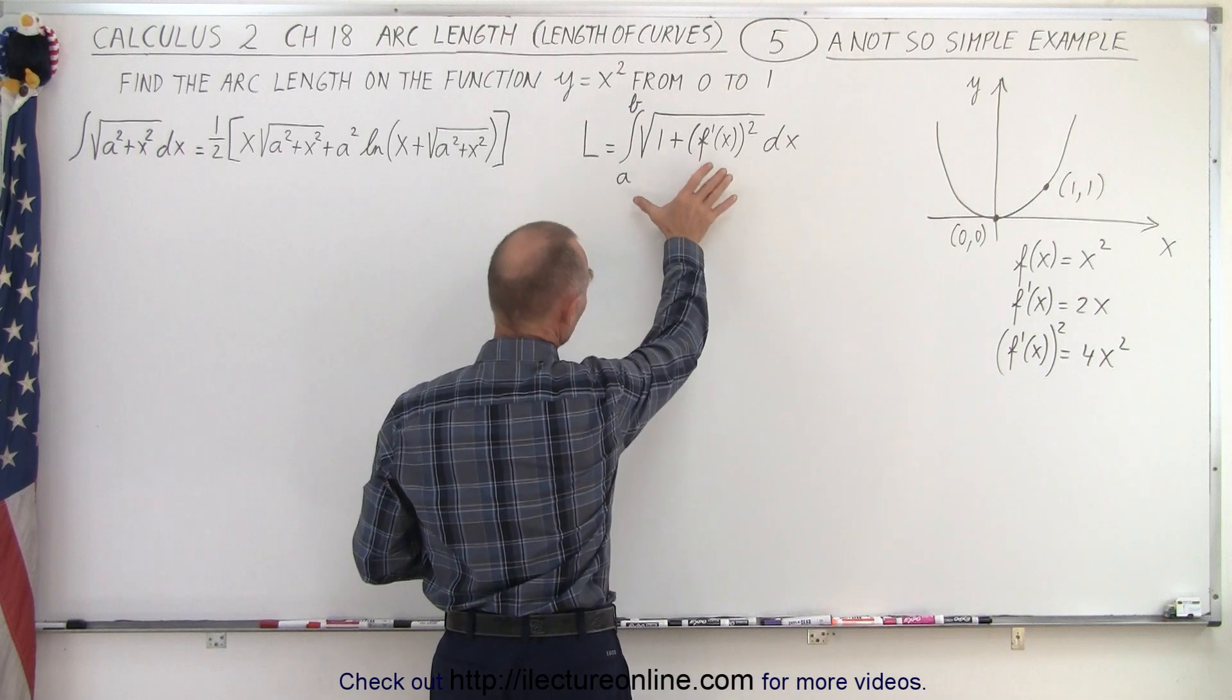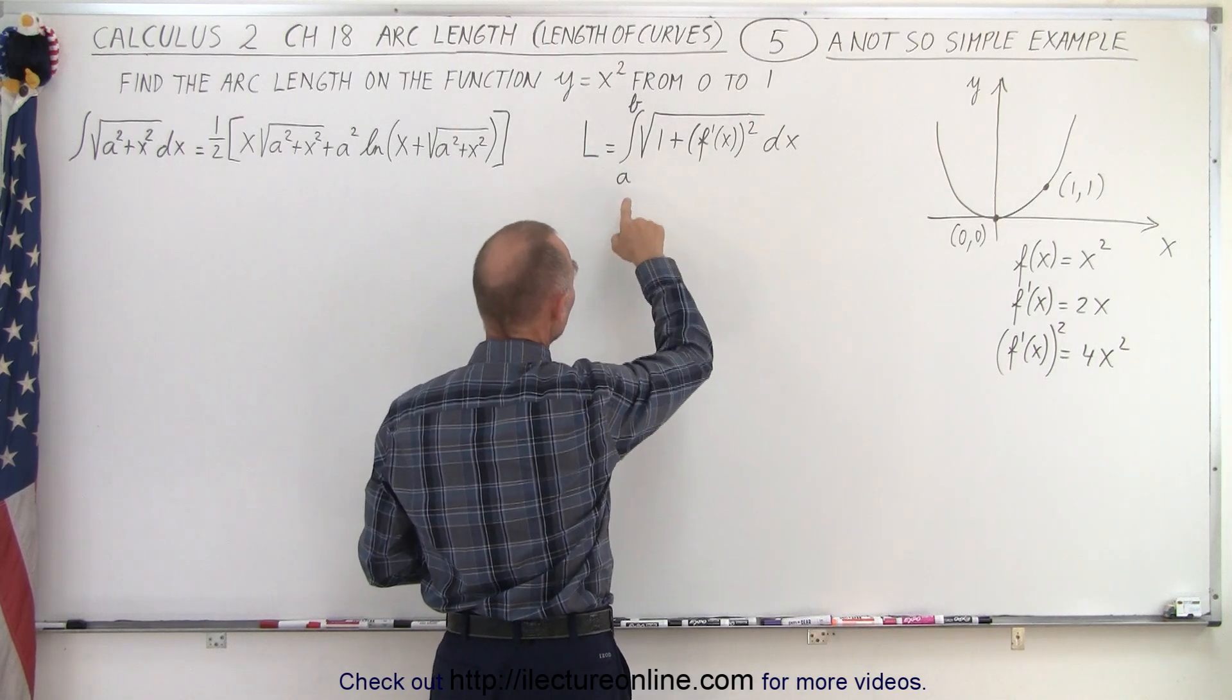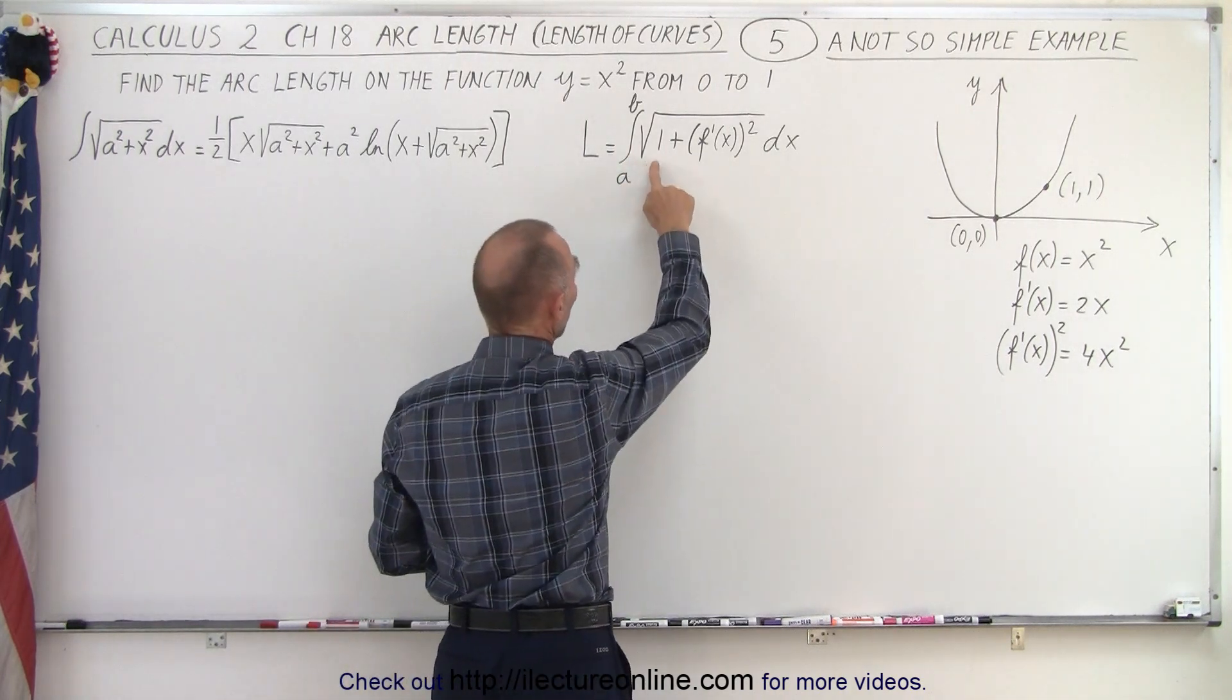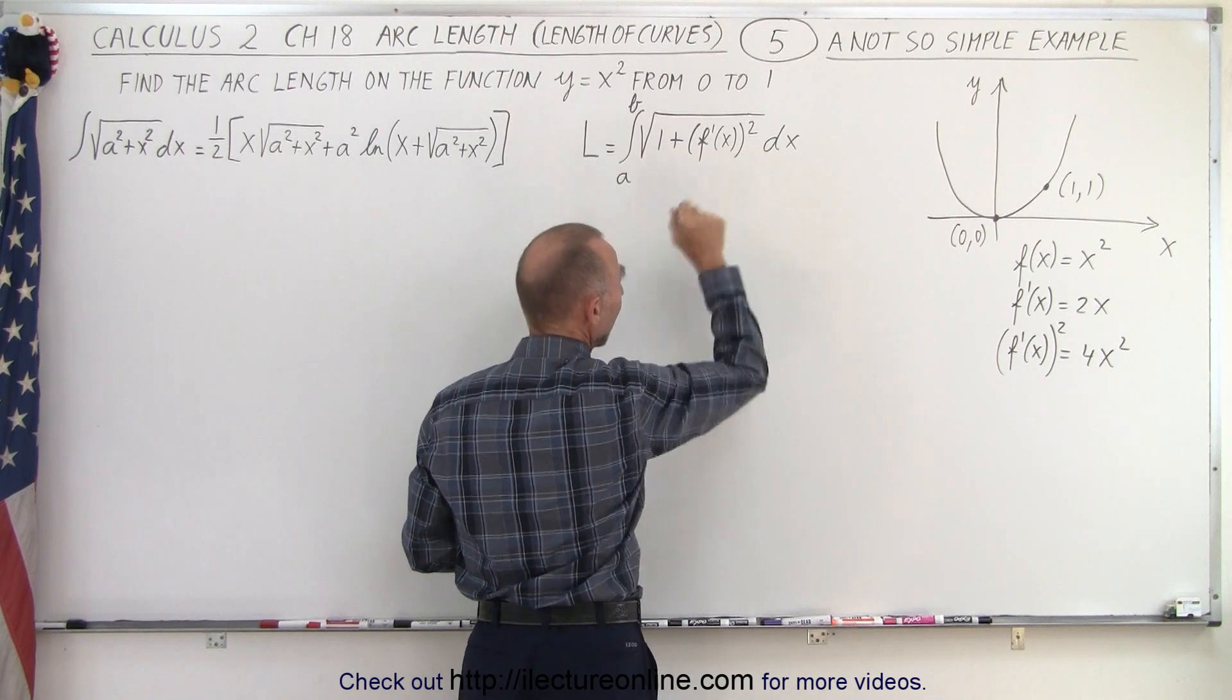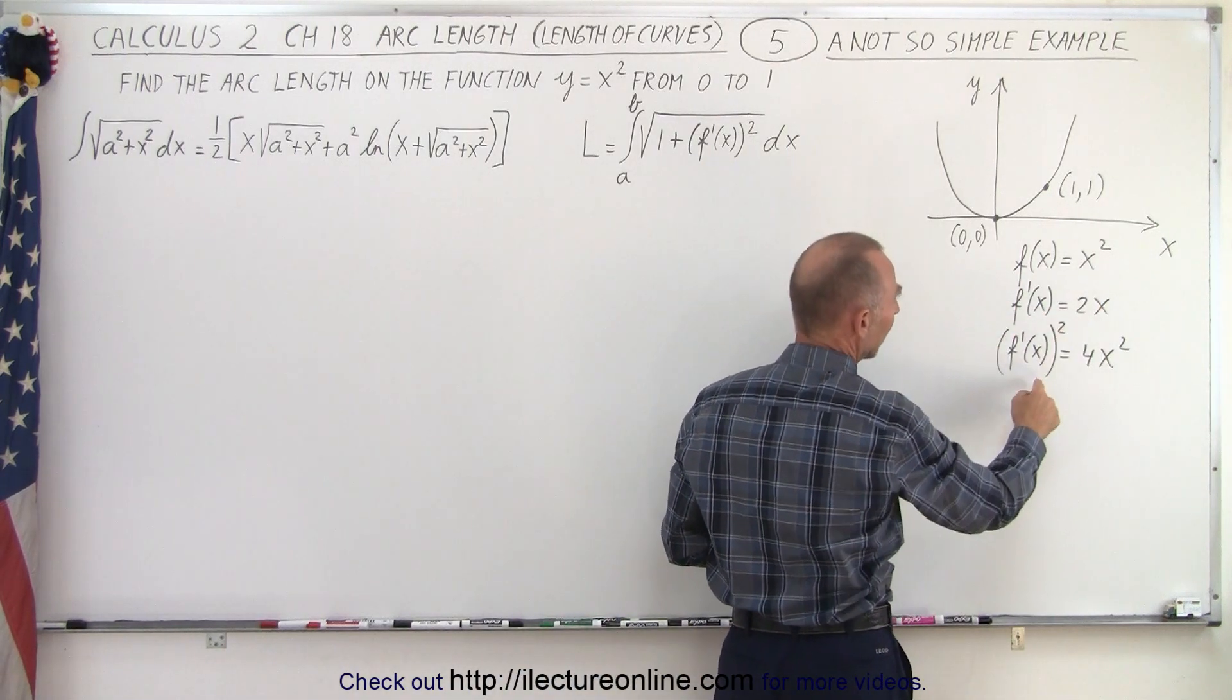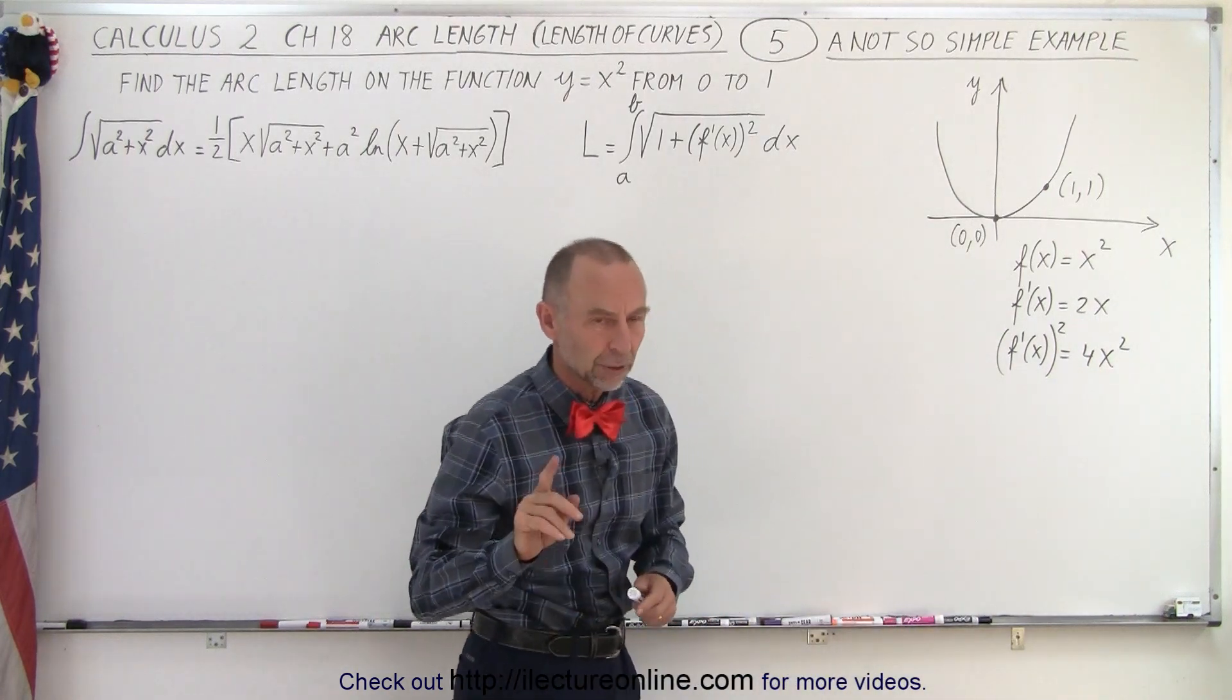So first of all, this is the general equation to find the arc length of a curve. It is the integral from a to b, and notice those are x limits from 0 to 1, of the square root of 1 plus the derivative of the function squared times dx. So here we have the function f(x) equals x squared, the derivative is 2x, and the derivative squared is therefore 4x squared.